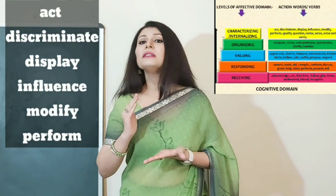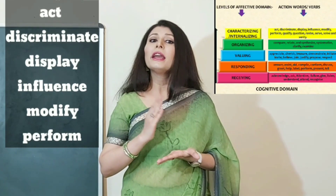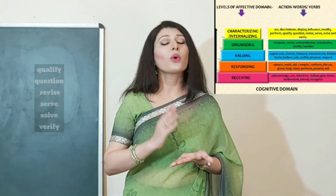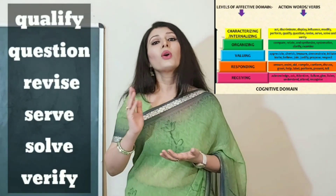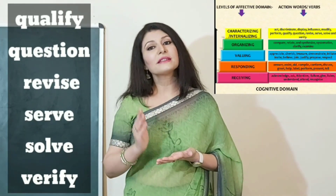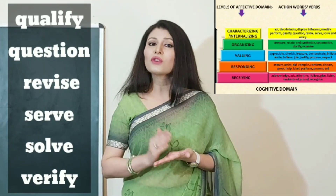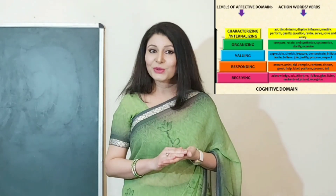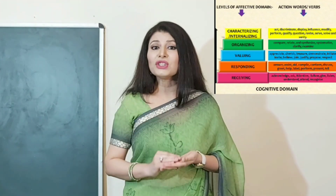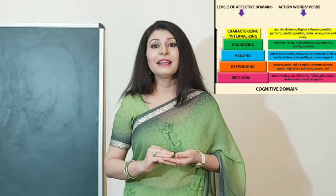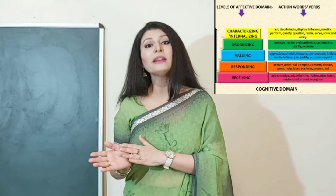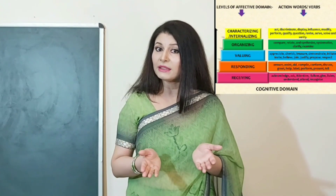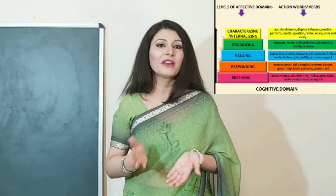The verbs for the characterizing level include: Act, Discriminate, Display, Influence, Modify, Perform, Qualify, Question, Revise, Serve, Solve, and Verify. Teachers can use this verb chart to set their learning objectives for the affective domain.